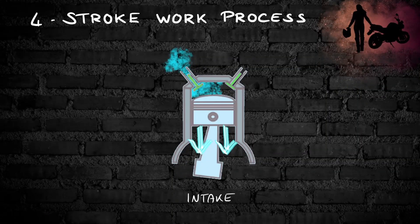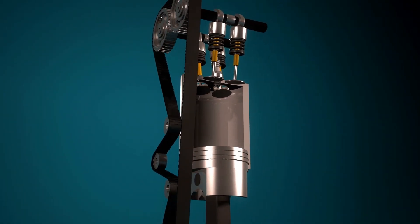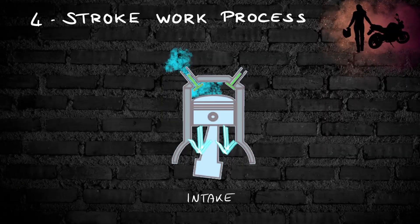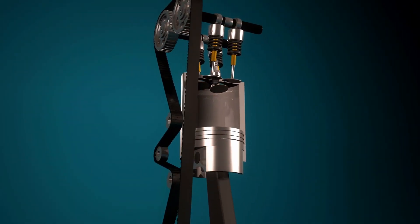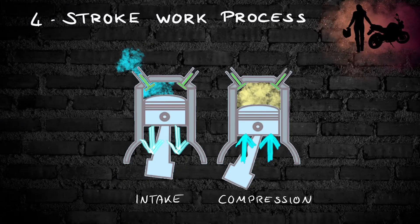At the beginning of the intake stroke, the piston is located at the top of the cylinder, which is called the top dead end. Then the piston moves downward and the inlet valve opens, allowing air-fuel mixture to enter the cylinder. The piston then reaches the lowest point of the cylinder — the bottom dead end. In the next stroke, the compression stroke, the piston moves up. The inlet valve as well as the exhaust valve are closed, so the air-fuel mixture gets compressed by the moving piston.